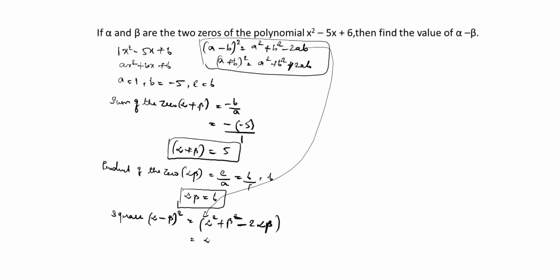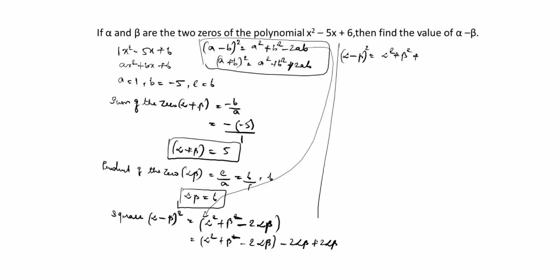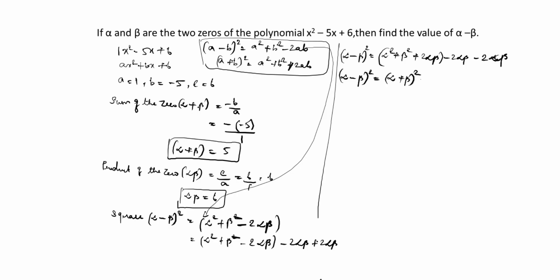So (alpha minus beta) squared equals alpha squared plus beta squared minus 2 alpha beta. After that, we add and subtract 2 alpha beta: alpha squared plus beta squared minus 2 alpha beta plus 2 alpha beta minus 2 alpha beta. You see, plus 2 alpha beta and minus 2 alpha beta cancel. So (alpha minus beta) squared equals alpha squared plus beta squared plus 2 alpha beta minus 4 alpha beta, which equals (alpha plus beta) squared minus 4 alpha beta.